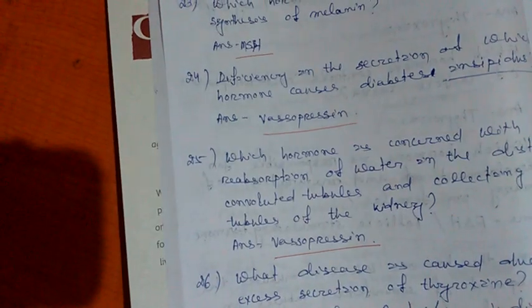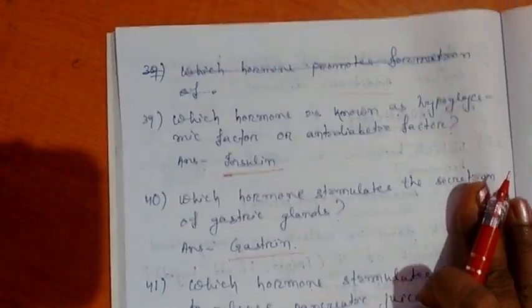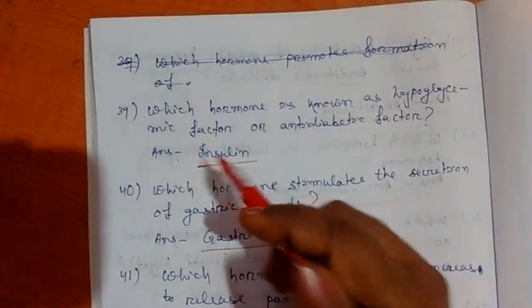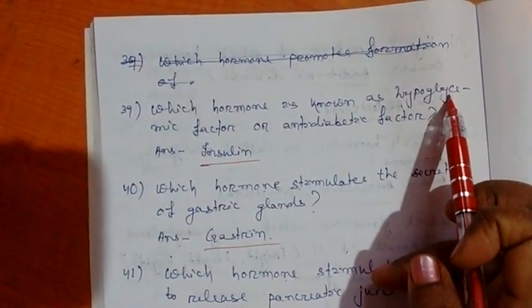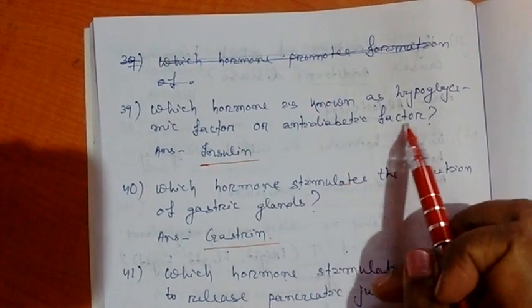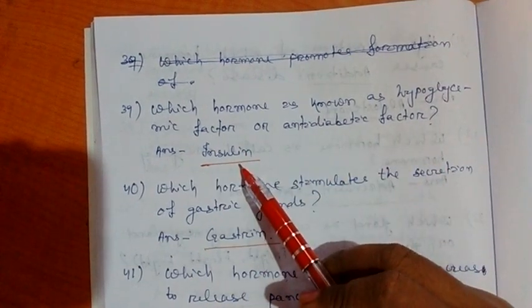Question number 39. Which hormone is known as hypoglycemic factor or anti-diabetic factor? Answer is insulin.